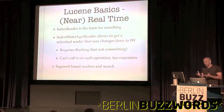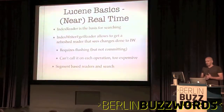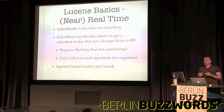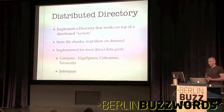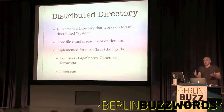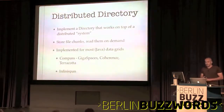My experience with Lucene comes from writing Compass in Java — I tried to make Lucene more approachable to Java developers. Through the lifecycle of Compass, I was struggling with trying to make Lucene more distributed. The first aspect I tried to tackle was: let's take the directory itself and try to make it distributed. If we can have a distributed file system and the directory reflects that, we can possibly scale Lucene itself.